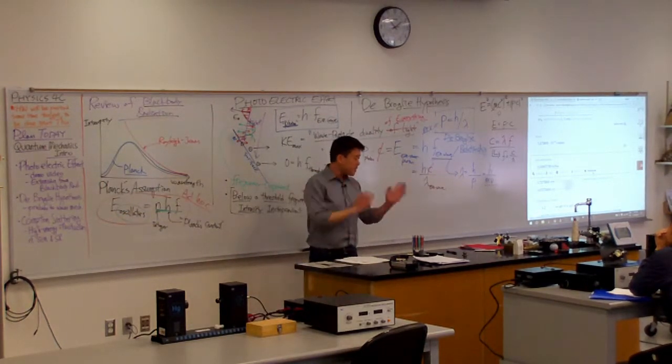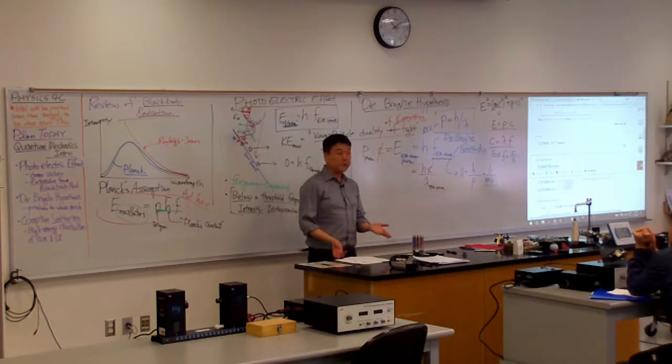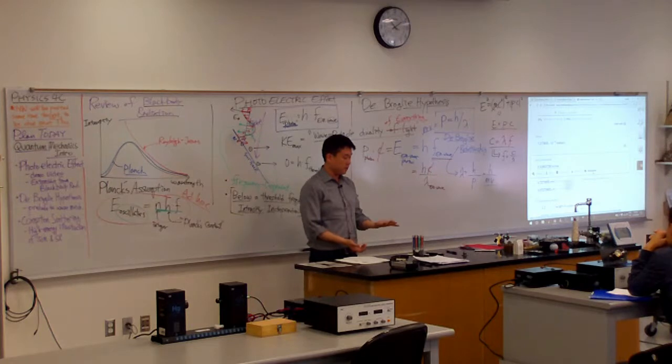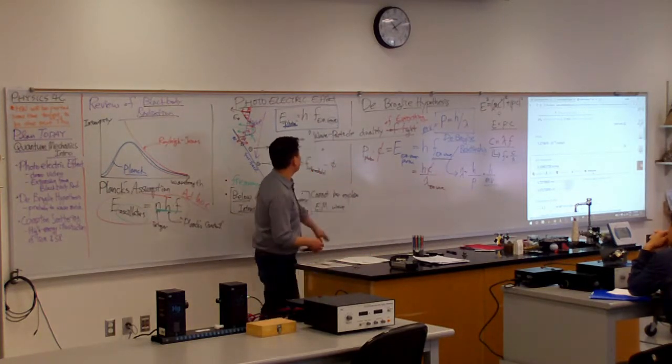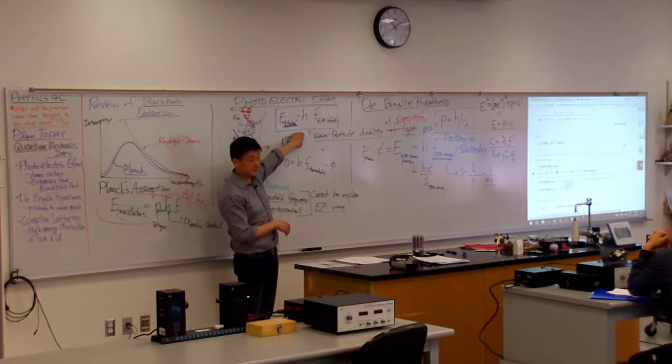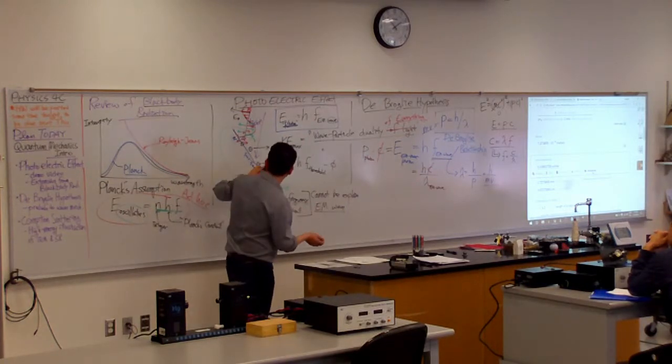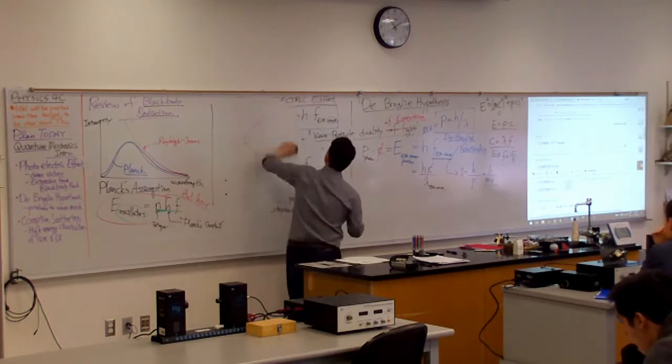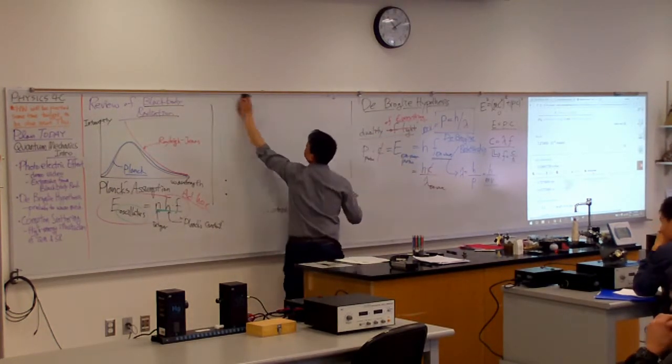So I just want to set up the picture and describe what's seen experimentally as one of the early confirmations of the particle nature of light. So this is the setup for Compton scattering experiment. This is what it looks like.